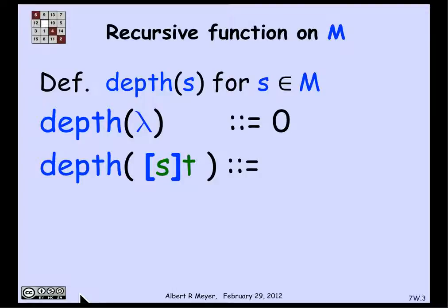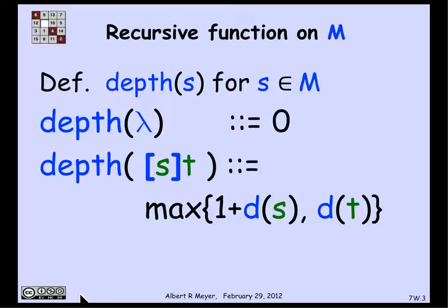What about the depth of the constructor — putting brackets around s and then following it by t? Putting brackets around s gives a string one deeper than s. Then following it by t, the depth is as deep as t. So the depth of the constructor equals the max of 1 plus depth of s and depth of t. That is our recursive definition of depth.